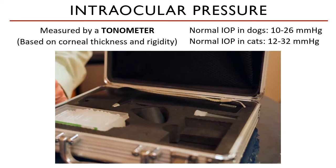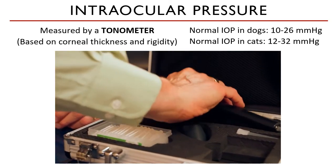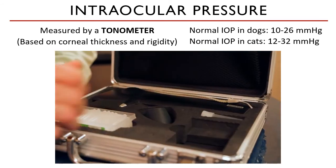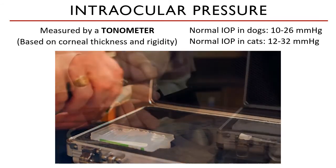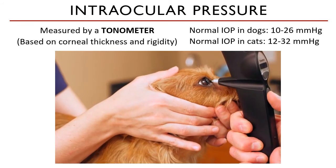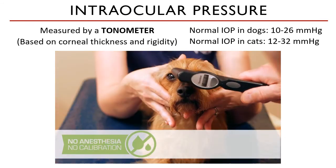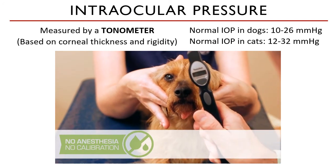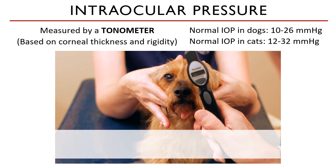Let's see how a tonometer works. Intraocular pressure is measured with a rebound principle — a lightweight sterile probe is inserted into the instrument and will gently make contact with the cornea. Tonometry with a TonoVet is a very quick process; it requires no anesthetic and should cause no discomfort, and it will not place excessive pressure on the eye. After three to five probes, the machine will give you a value of the IOP in that eye.